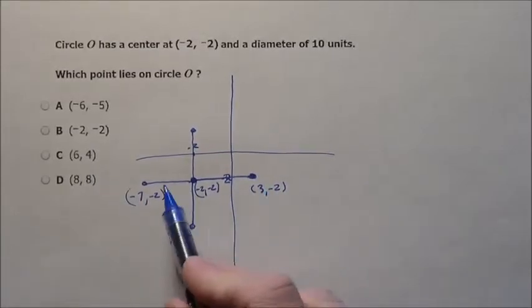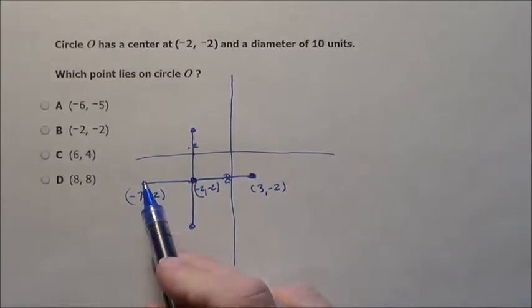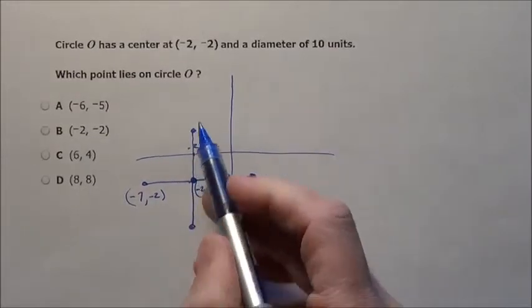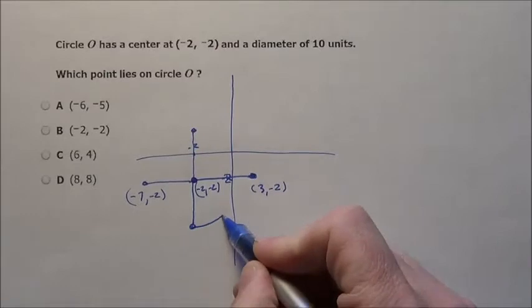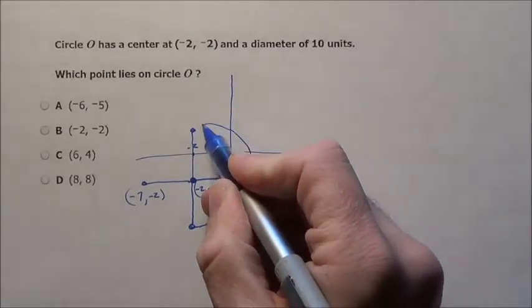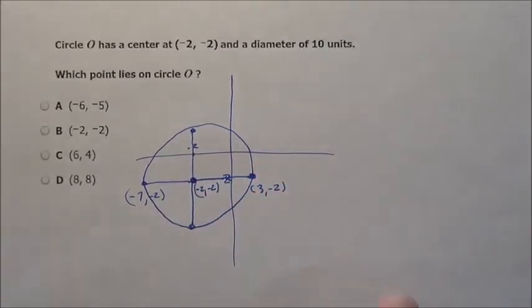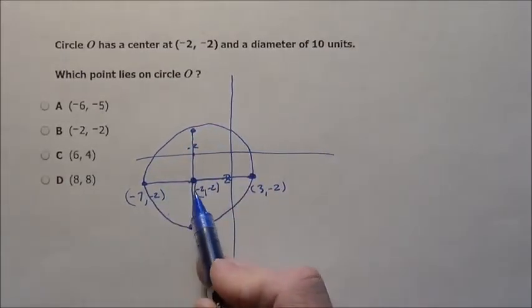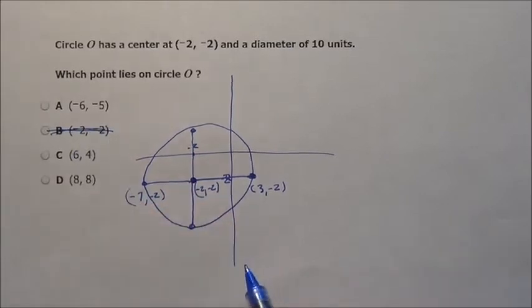So far they didn't go to the right 5 units nor to the left 5 units. Now some of you may accidentally try to pick this point B. B, that's the center, that's not on the circle. They are talking, hey, what is on this outside circle bit here? That's what they are asking. What is sitting on this outside of it? Not who is in the center.